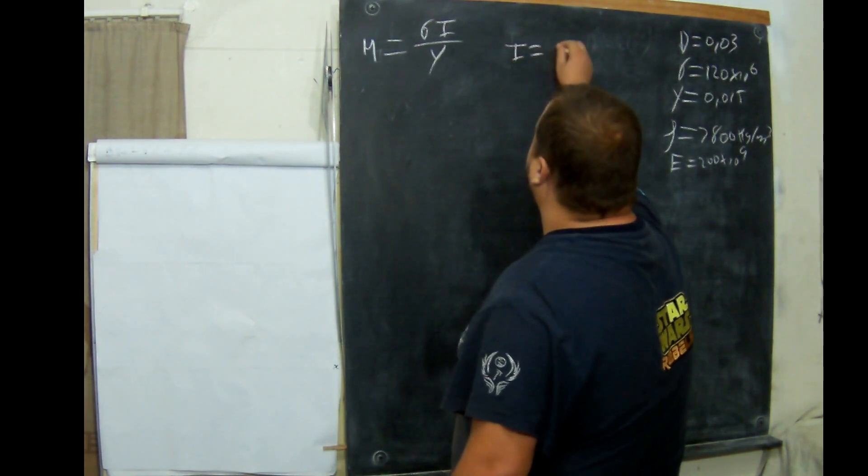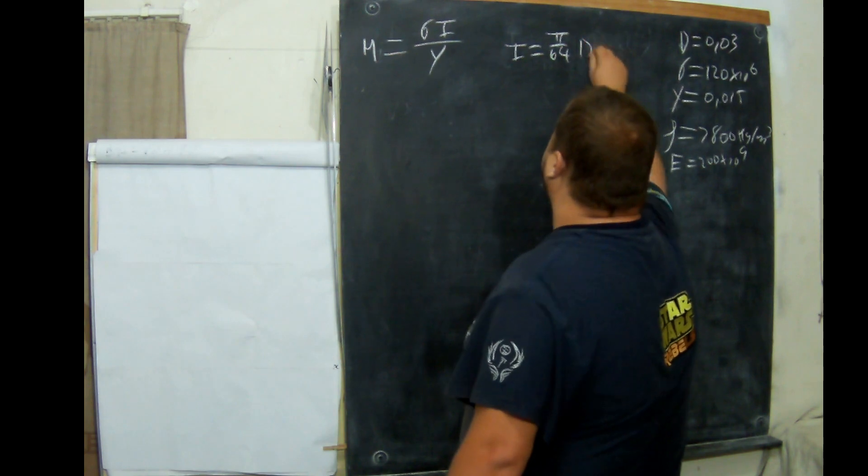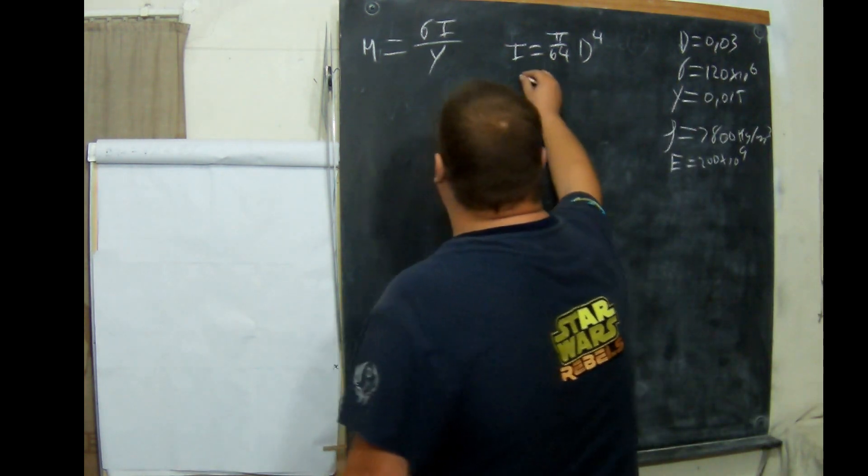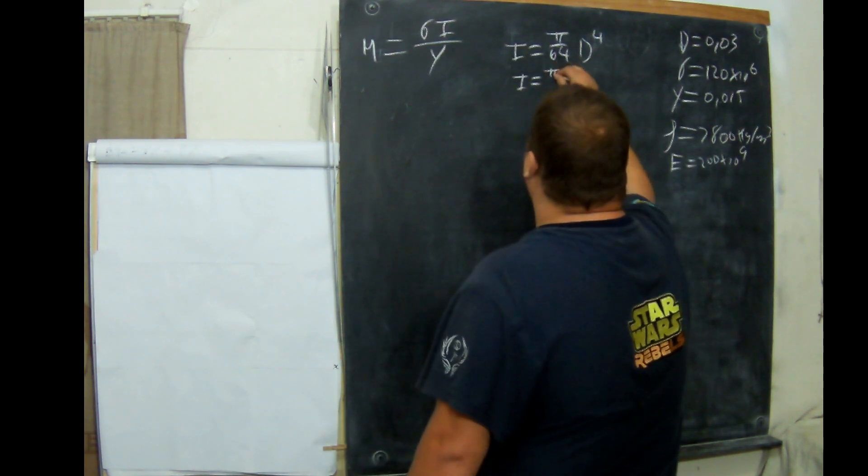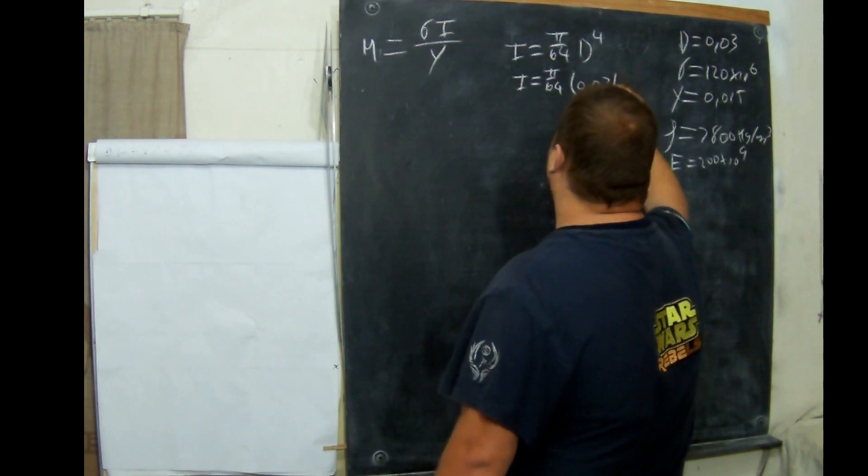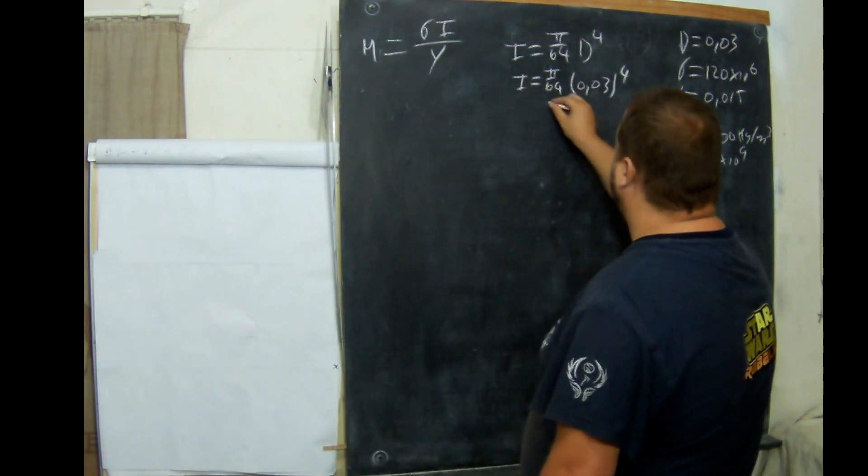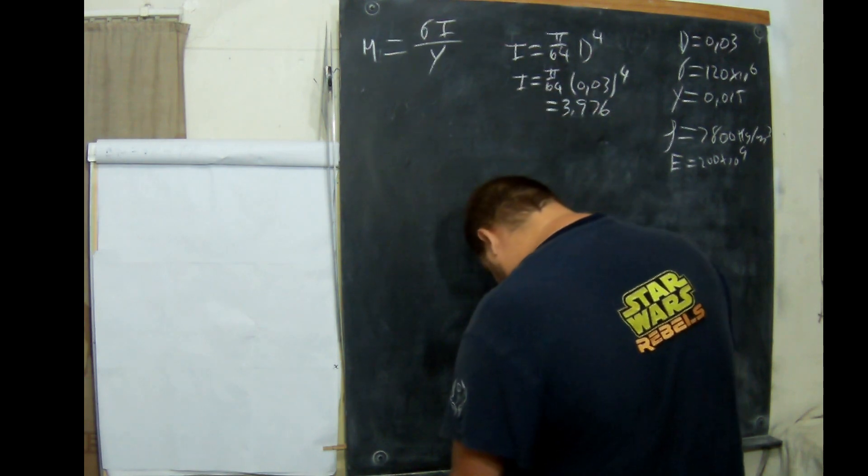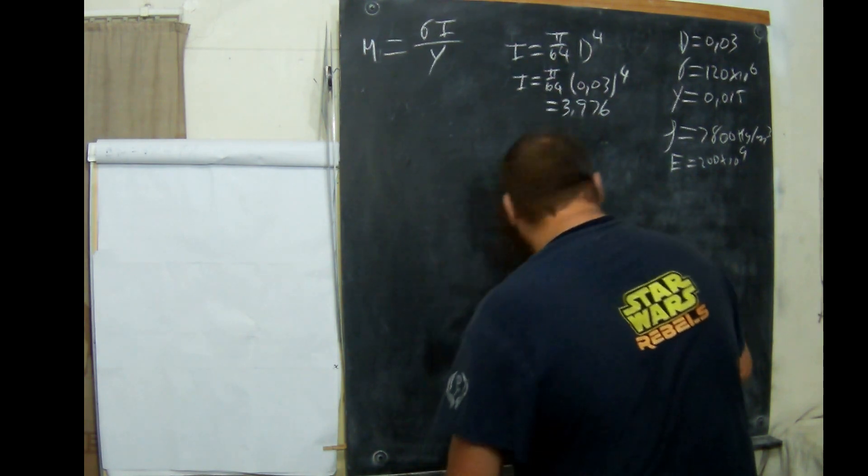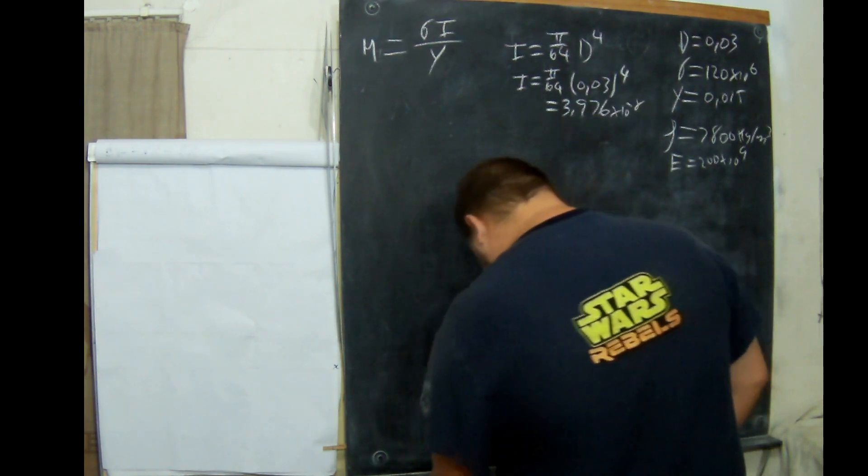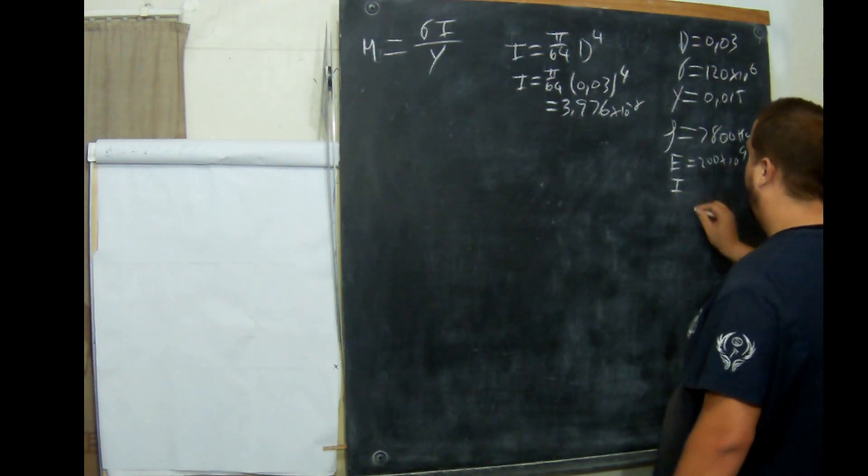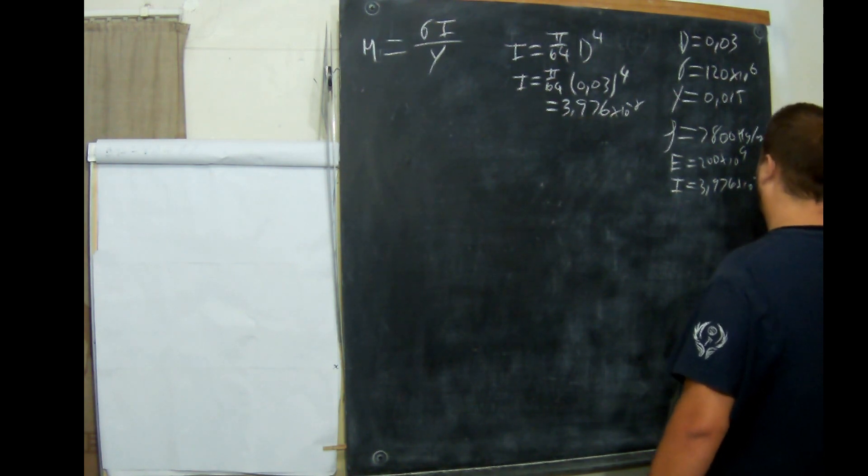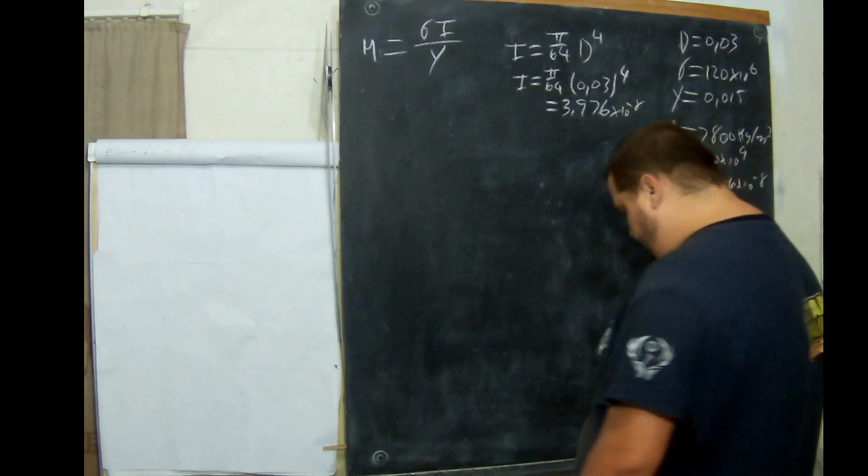i equals π over 64 d to the power of 4. So i equals π over 64 times 0.03 to the power of 4. And that equals 3.976 times 10 to the minus 8. I'm going to put i here because I have a feeling i will be important later. All values will be important.